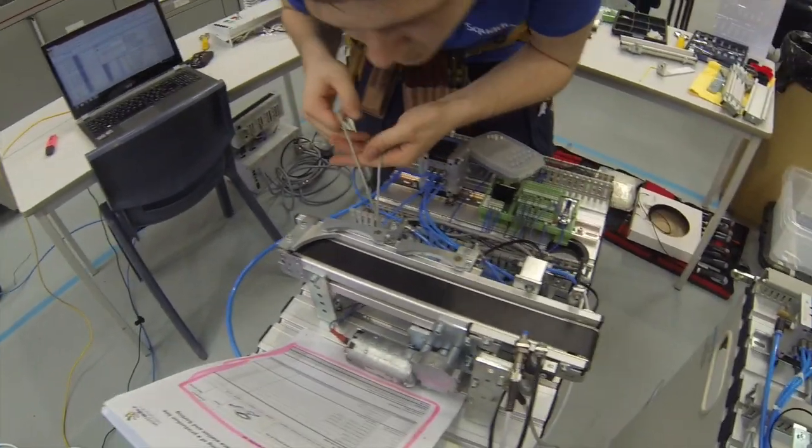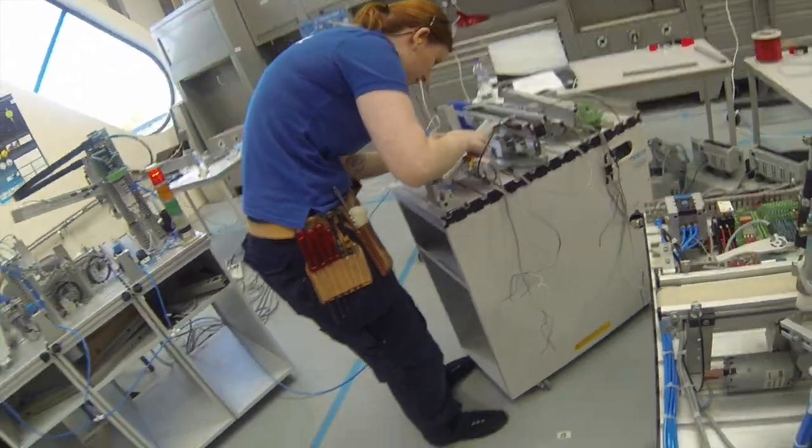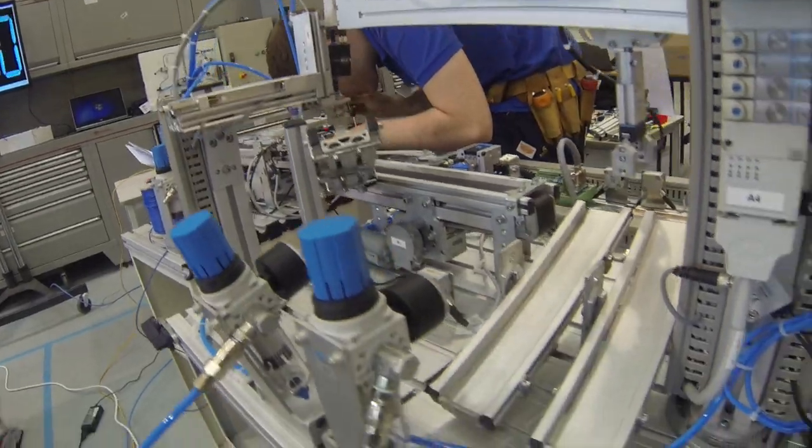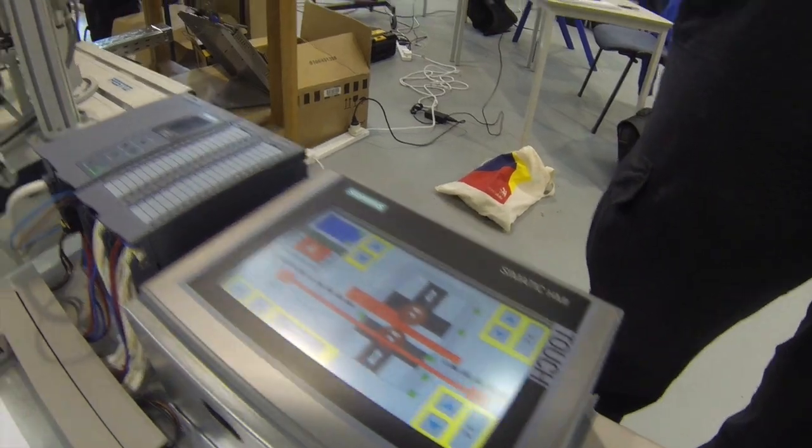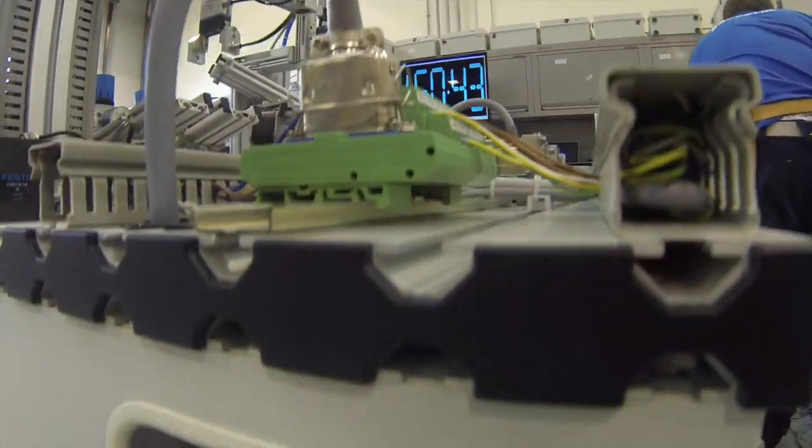First is the assembly, programming and commissioning of a station. The allocation will be checked using a simulation box, and the function will be checked using a PLC board.